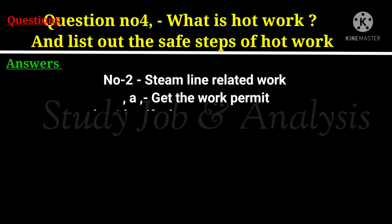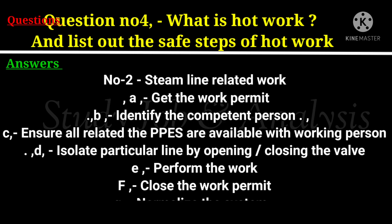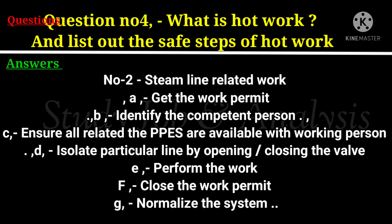Number 2: Steam line related work. A. Get the work permit. B. Identify the competent person. C. Ensure all related PPEs are available with the working person. D. Isolate the particular line by opening or closing the valve. E. Perform the work. F. Close the work permit. G. Normalize the system.